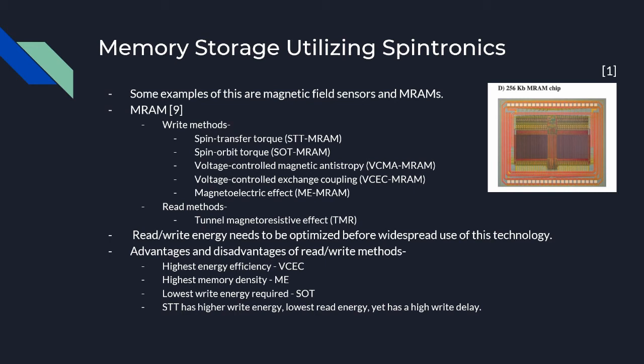The magneto-electric effect has a higher cell density than the VCEC because of the smaller footprint required to store the data, due to its structure being composed of multi-ferroic rather than a single ferroic material. The SOT has the lowest write energy of the methods, making it useful for reducing the energy required for MRAM devices to operate. The STT, the oldest method, has the highest write energy but the lowest read energy; however, it would have limited applicability because of its high write delay, meaning it takes extra long to write data.